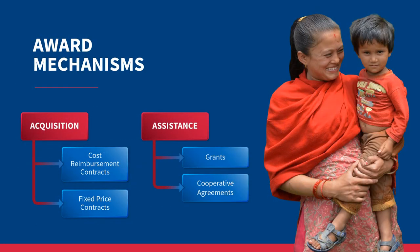When USAID selects your organization to receive an award, the type of award determines how the funds should be managed. This chart shows different types of contracts as well as different assistance awards. The two most common types of contracts used by USAID are cost reimbursement contracts with different fee methods and fixed price contracts. Under assistance awards, there are grants, which include fixed amount awards, and cooperative agreements. You can learn more in the Bureau for Management Office of Acquisition and Assistance Fiscal Year 2020 Progress Report, available in the Resources section.